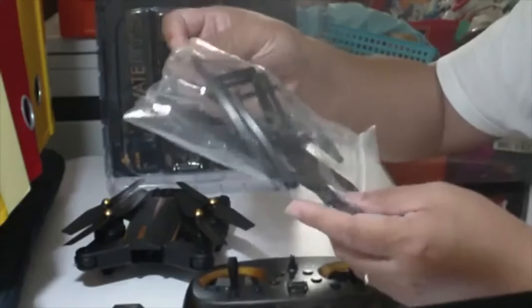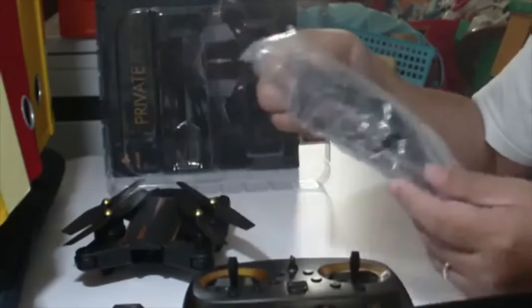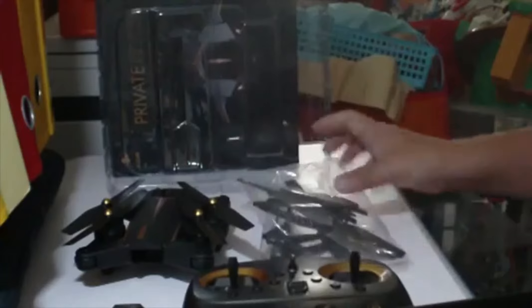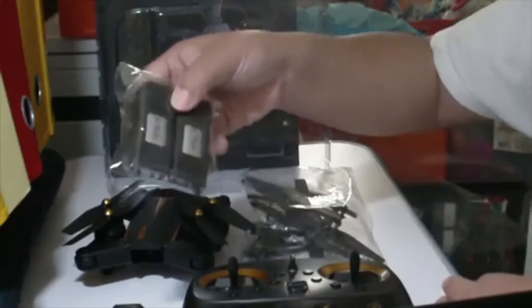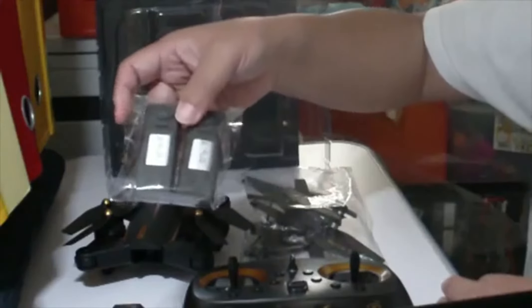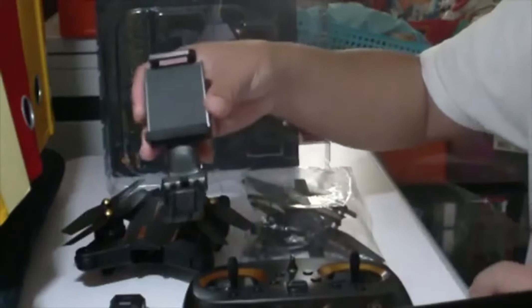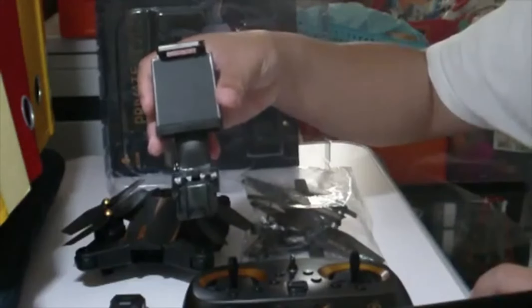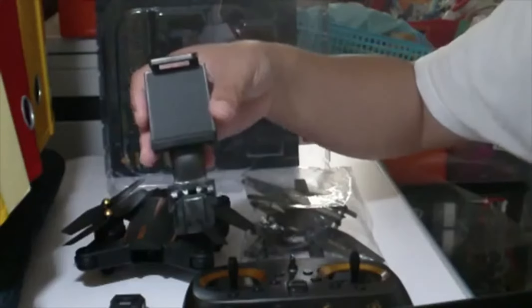They have a pack of extra propellers and propeller guards together with a small screwdriver. Because this is a three-battery pack, there are two additional spare batteries here, and a phone mount for the controller.